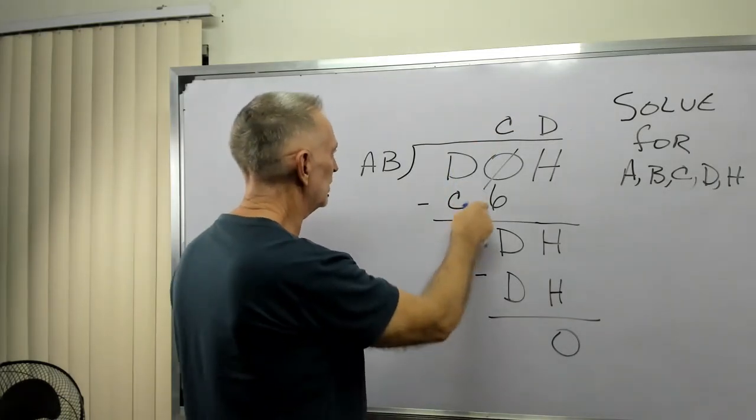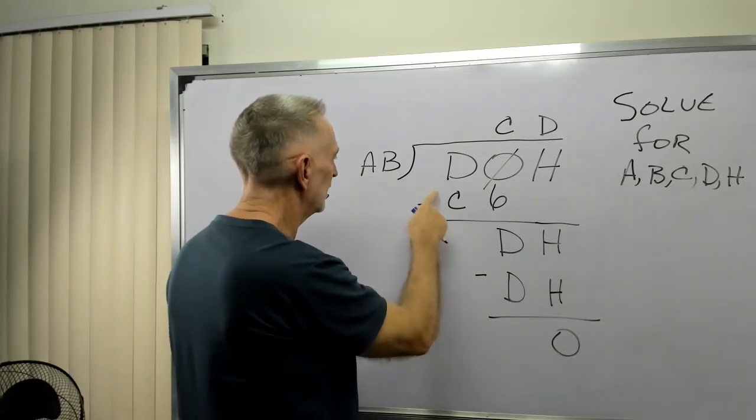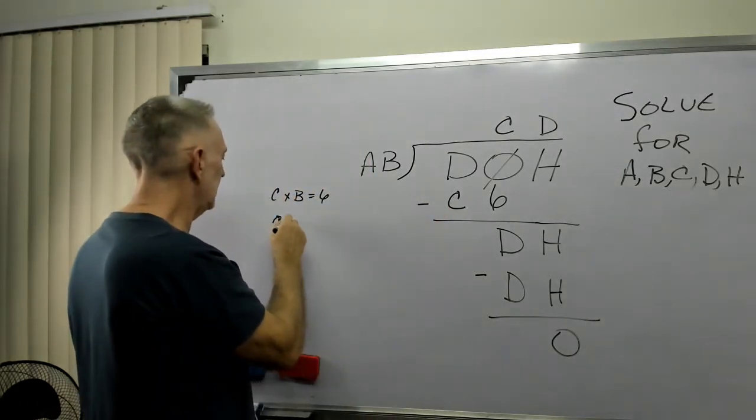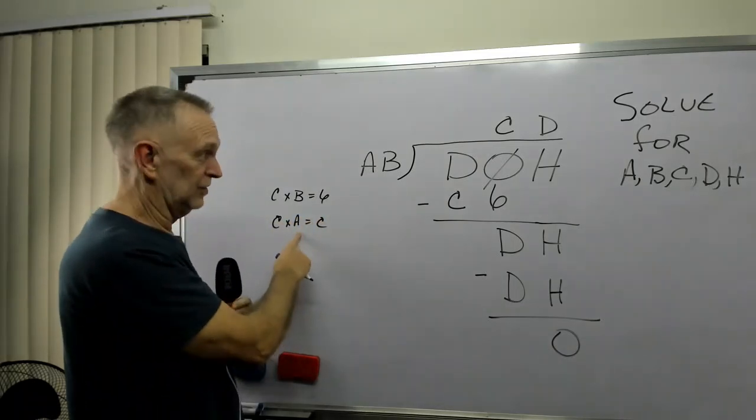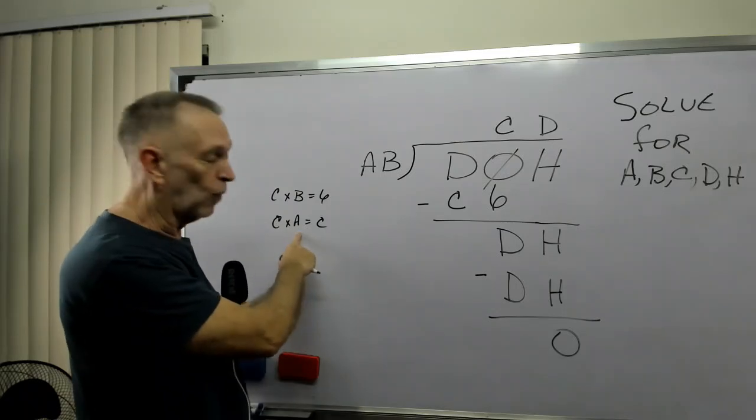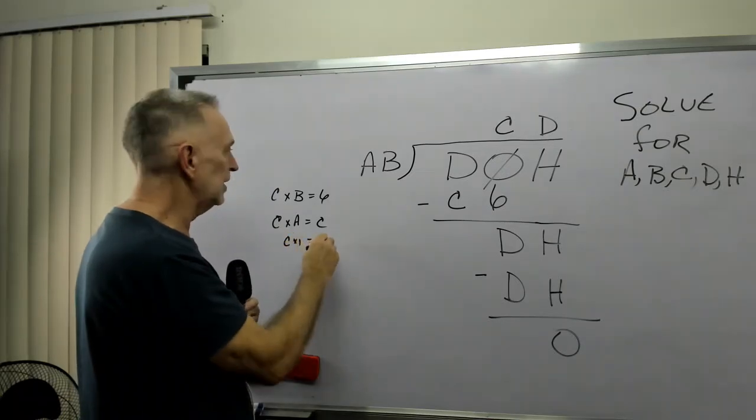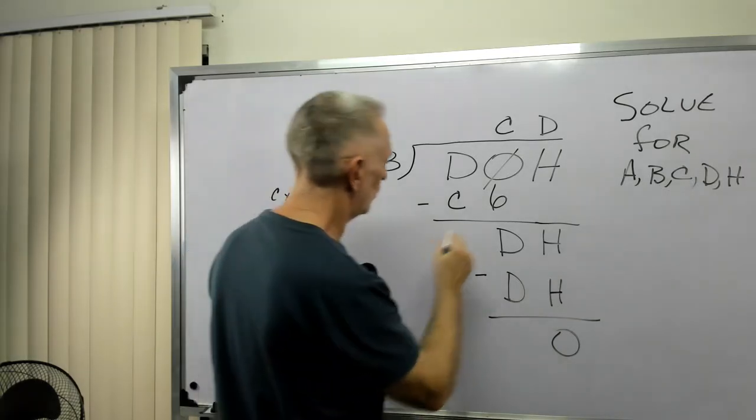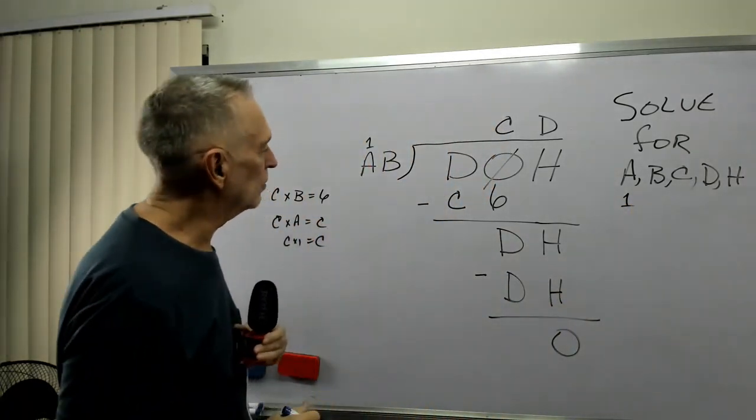We would write that 6 down, then C times A gives me C. C times A equals C. Well, what do you think A is equal to? A equals 1. Because C times 1 equals C. So we have our first clue here. A equals 1. We'll just write that right here. A equals 1.